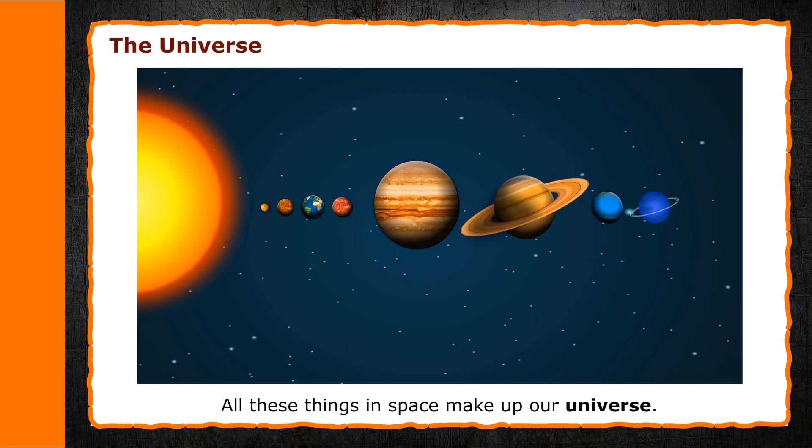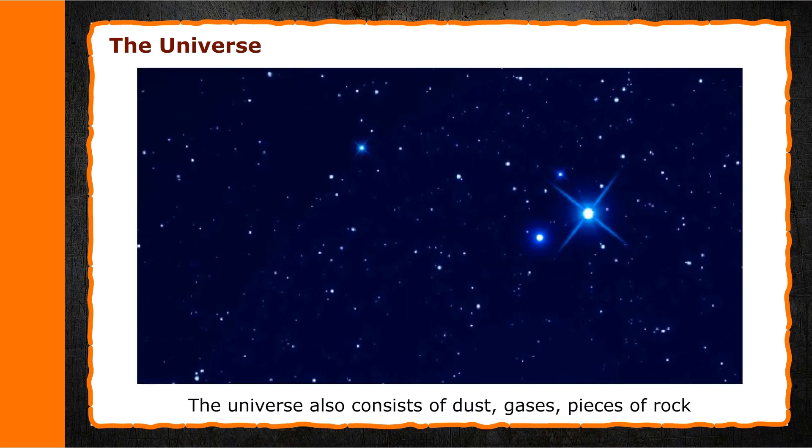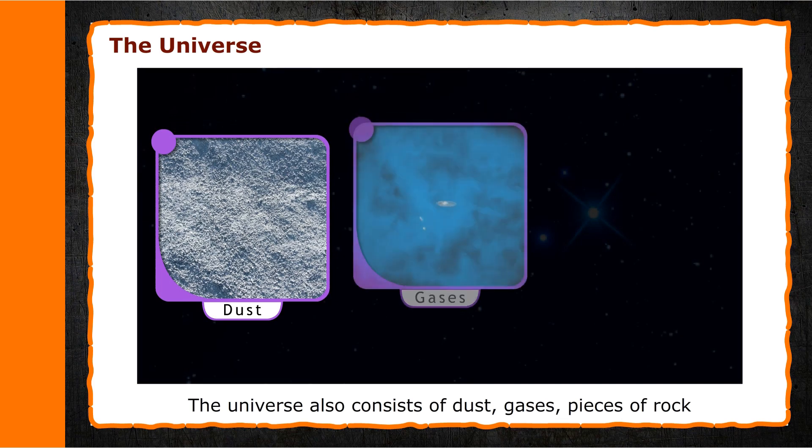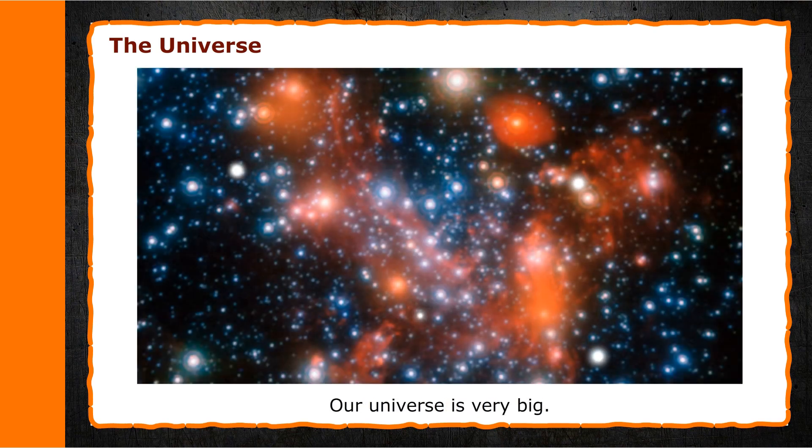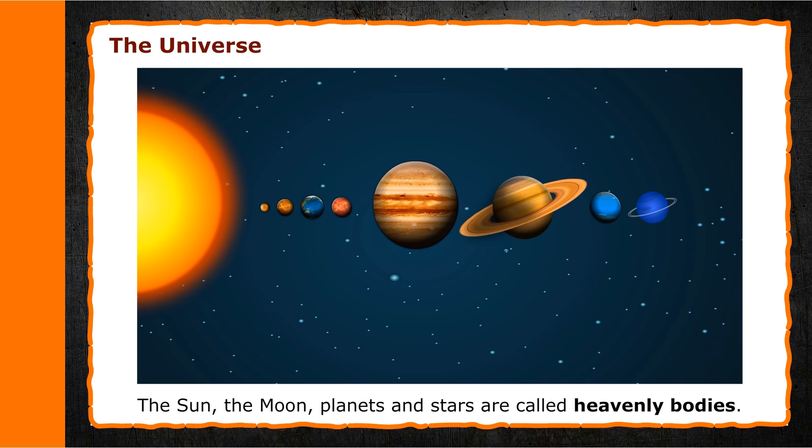All these things in space make up our universe. The universe also consists of dust, gases, pieces of rock, and many other things you will read about later. Our universe is very big. The Sun, the Moon, planets, and stars are called heavenly bodies.